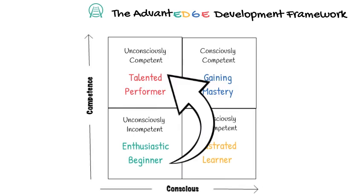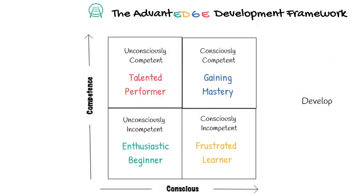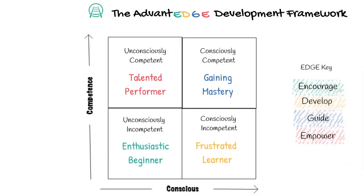Very few people who are naturals or gifted can seemingly skip the in-between stages. Mozart could play the piano supremely well at four years old, but there are no Mozart leaders. Leadership development takes time. Done the right way, it can take less time, and it needs four different approaches through the development cycle. You need EDGE: Encourage, Develop, Guide, and Empower.